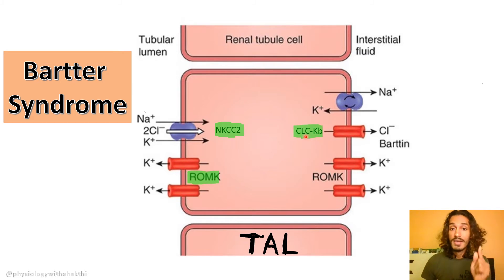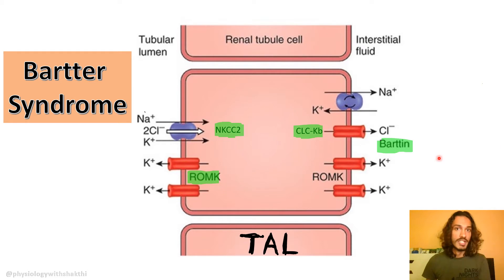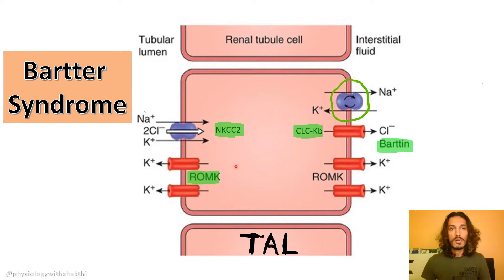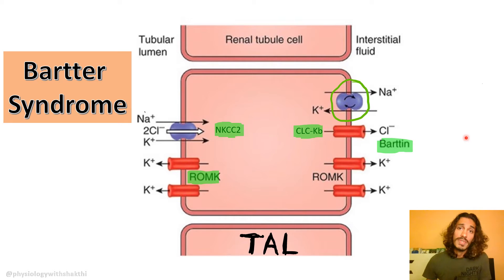Then we have the chloride channel — specifically the chloride channel ClC-Kb. There is another variety ClC-Ka which is also there but not involved here. This chloride channel specifically has a subunit for its normal functioning called barttin. Apart from all this, we have your normal sodium-potassium ATPase at the basolateral segment, which provides the gradient for sodium to move. Potassium coming through either channel goes out through ROMK, and chloride comes in and goes out through the other side.